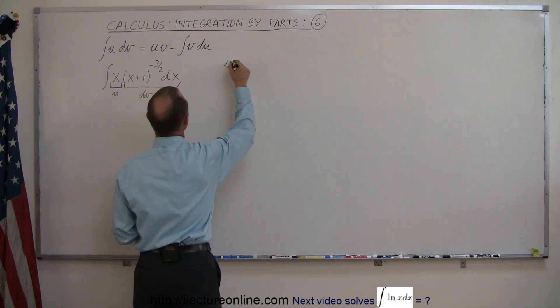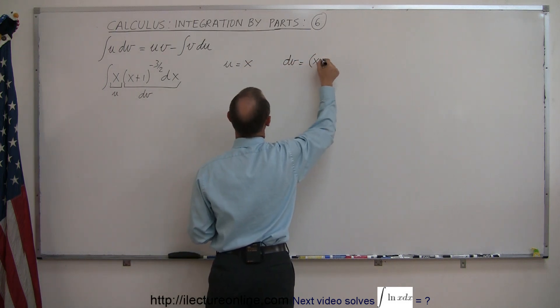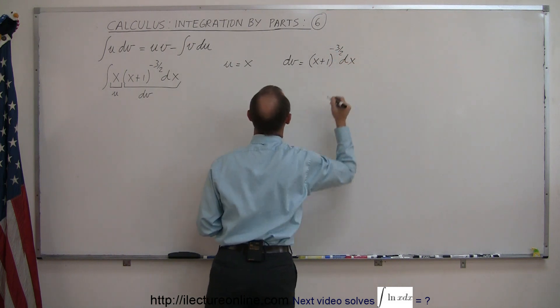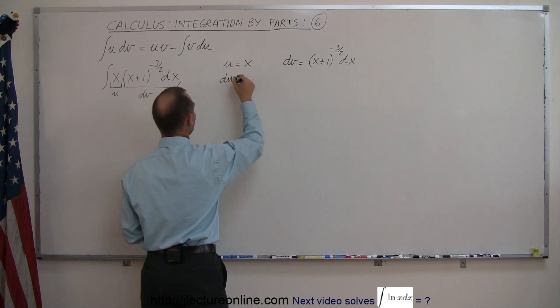So u is equal to x and dv is equal to the quantity (x+1) to the minus 3 halves power dx. So if we take the differential of u we get du and that would then be equal to dx.